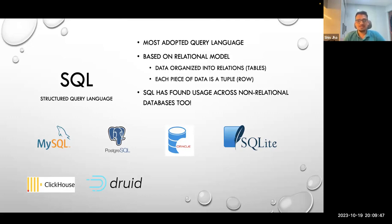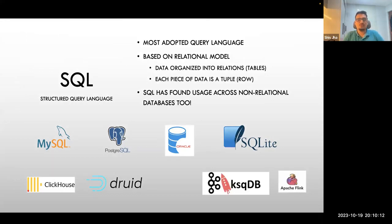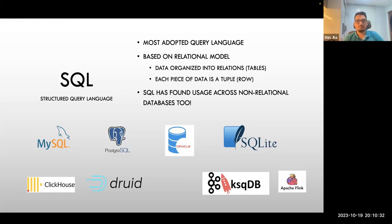SQL has found usage beyond relational databases. ClickHouse and Druid are not SQL databases in the conventional sense, although they also speak SQL these days. In fact, ClickHouse only supports SQL, while Druid has SQL as well as another native language. SQL is now actually supported across streaming systems as well — Kafka's KSQL DB, Apache Flink, and other newer systems in the streaming space all support SQL in some form, or plan to support it.